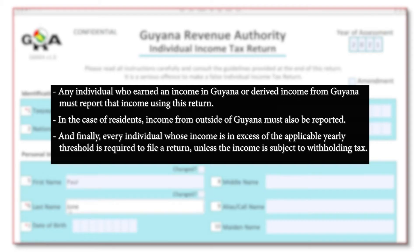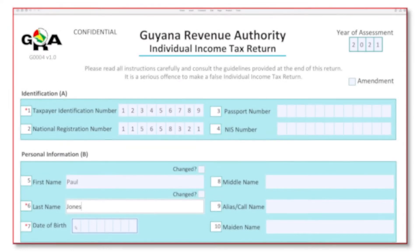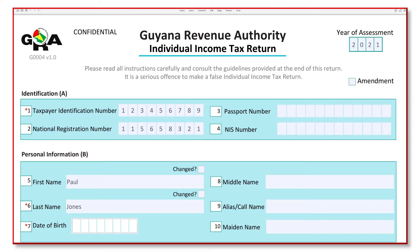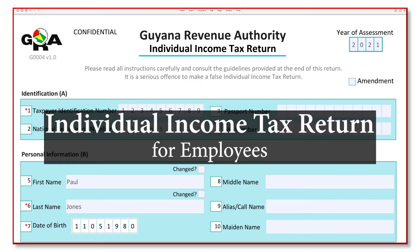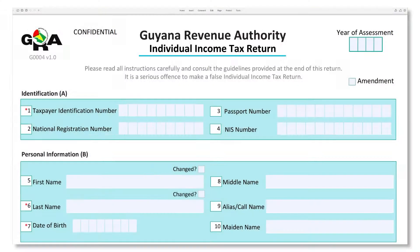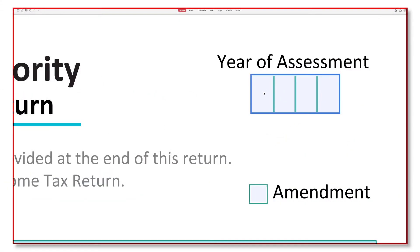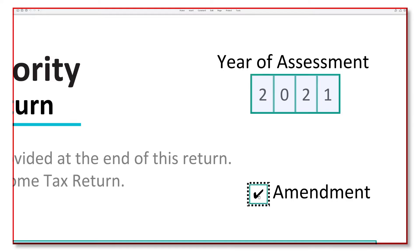Unless the income is subject to withholding tax. Now, individual income tax return for employees. At the top of the form, you must enter the year of assessment — that is the year that follows the calendar year in which the income was earned. There is also an amendment checkbox, which must be ticked if you are making changes to a return that was already submitted to the GRA.